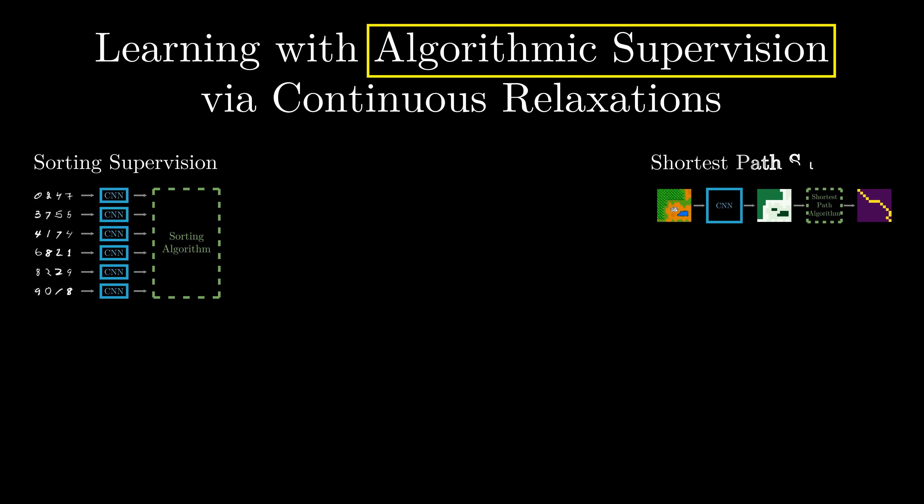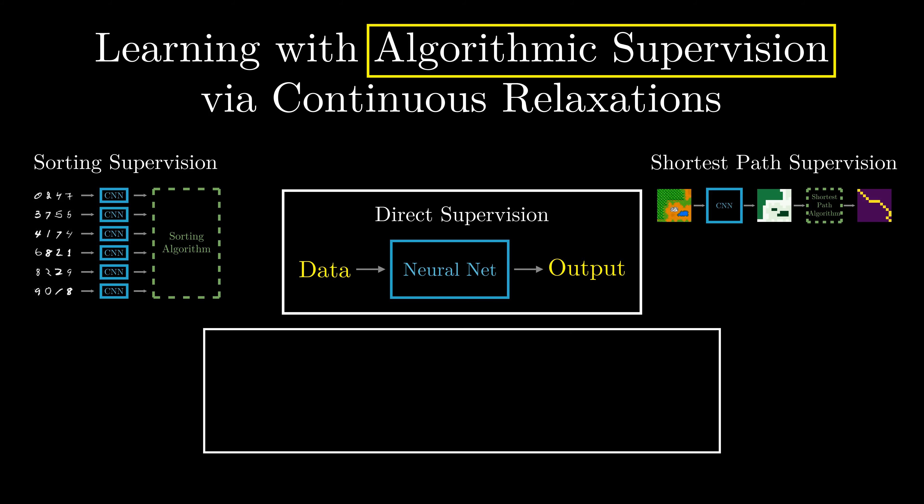Both of these settings follow the same overall architecture. While direct supervision propagates data to a neural network and the output of the neural network is supervised, for algorithmic supervision data is propagated through a neural network to produce an embedding and an algorithm is applied to this embedding and the output of the algorithm is then supervised.